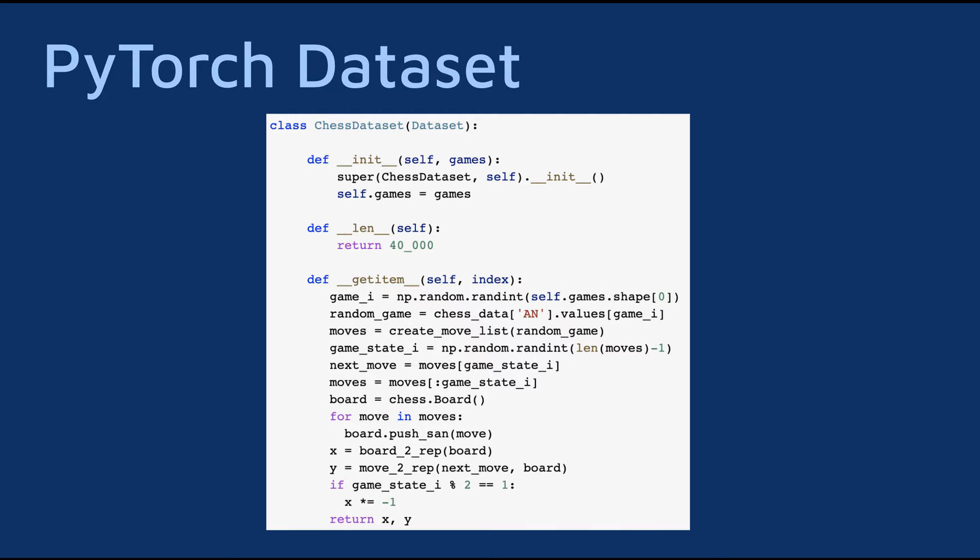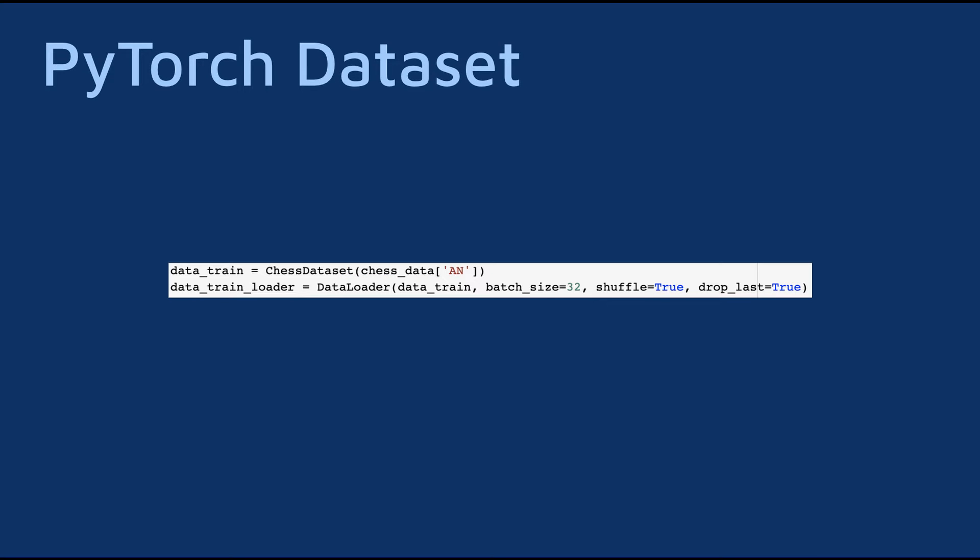Since I pick random games and moves, I just put a random large number as the length of the dataset. Since I used 40K, the dataset will sample 40K random moves before declaring there is no more data. Of course, next time it is used it will sample different games. Here is the full dataset class. You can initiate the dataset and the data loader with the desired hyperparameters. Notice the data loader will shuffle the dataset each time. I just wanted to show you this option, but it is not necessary here since the games are randomly selected anyway. The drop last argument will drop the last minibatch if there is not enough examples to create a minibatch with the correct size.